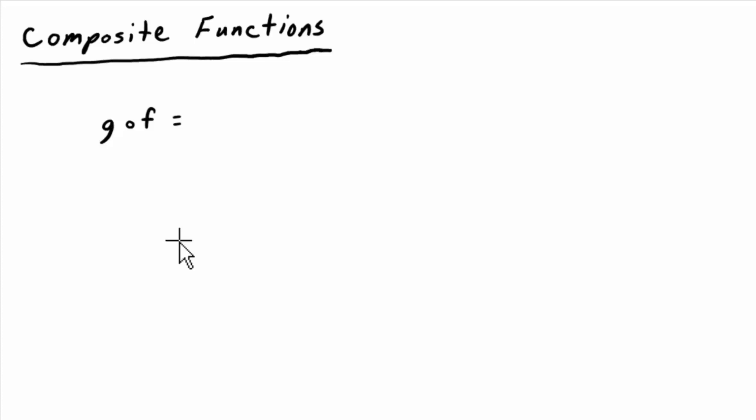So now we're talking about composite functions, functions of functions. When you see this notation, it looks like g and then a circle f. You say it like this: g composed with f.